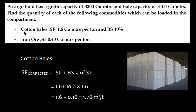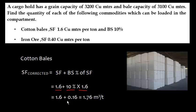For cotton bales, the storage factor is 1.6 cubic meters per ton and broken storage is 10%. The storage factor must be corrected for broken storage, which is added as a percentage of the storage factor. So the corrected storage factor is 1.6 plus 10% of 1.6, giving 1.76 cubic meters per ton.